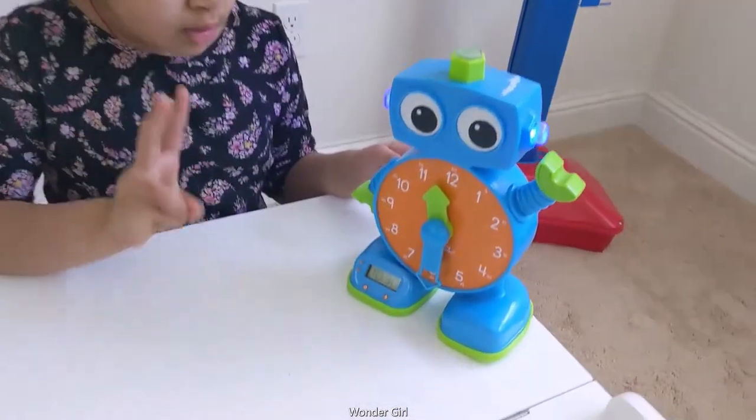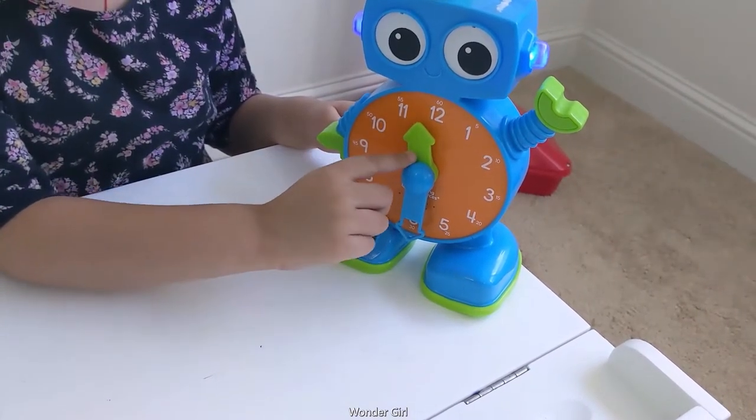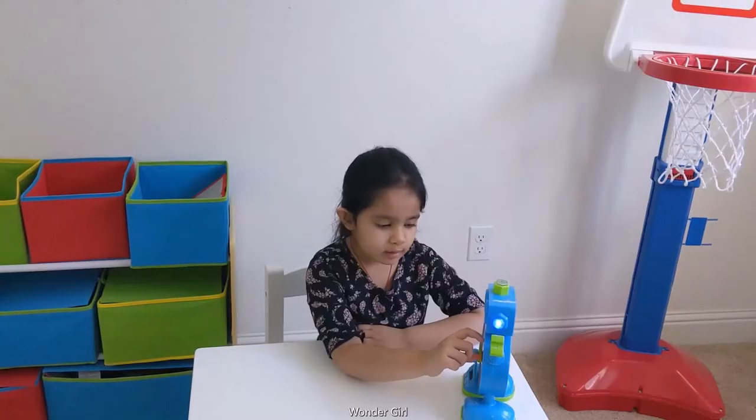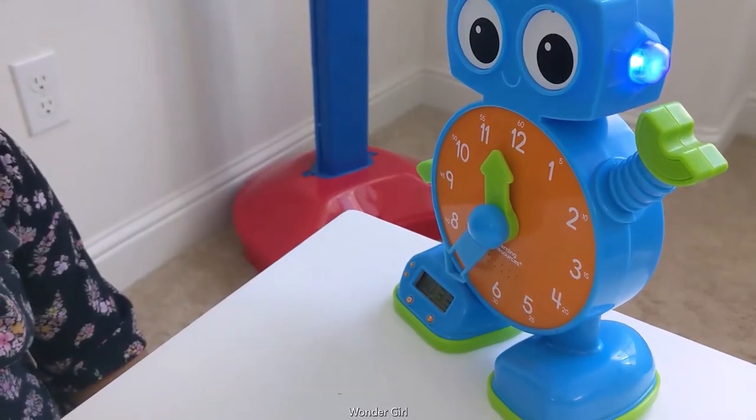A clock has two hands and the big one is for minutes and the small one is for hours. An hour has 60 minutes.